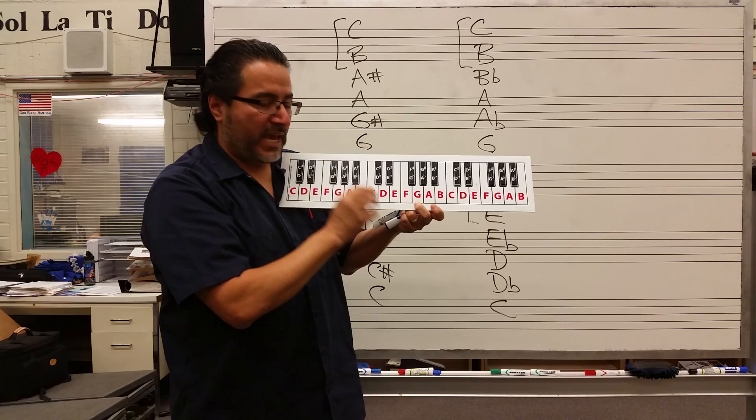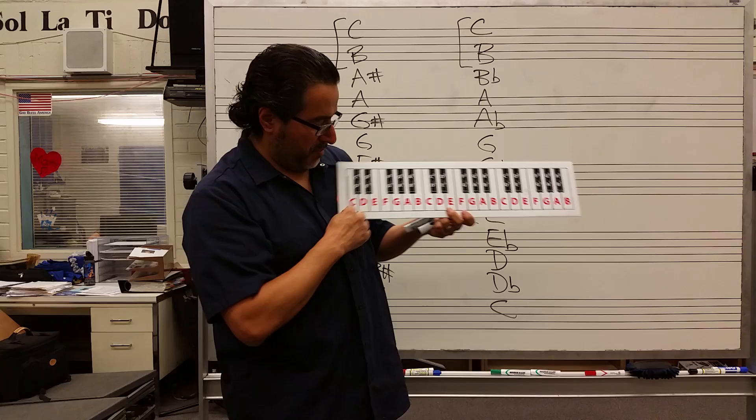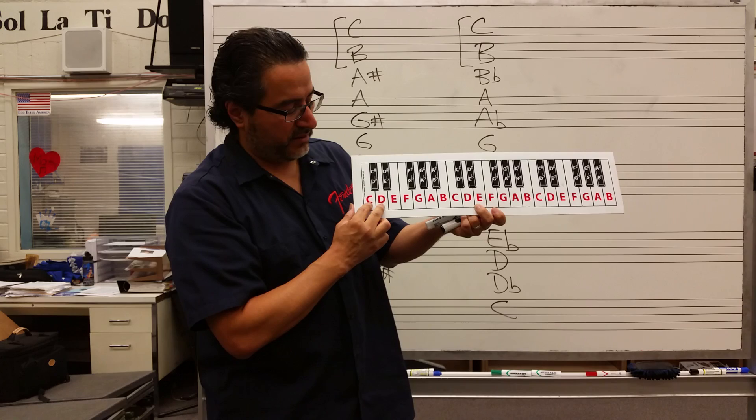Any one note to the very next note is a half step. From C to C-sharp or D-flat is a half step. D-flat to D, or C-sharp to D, is a half step. Any time you move one time on the chromatic scale, either up or down, that's a half step.